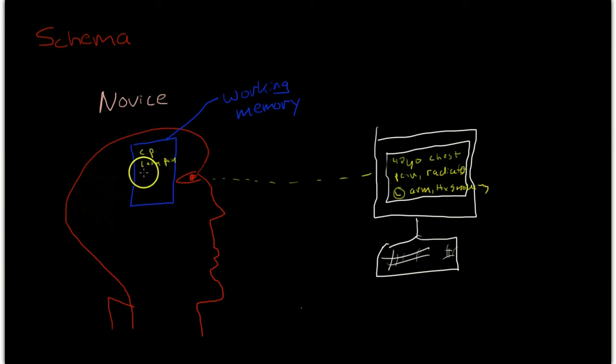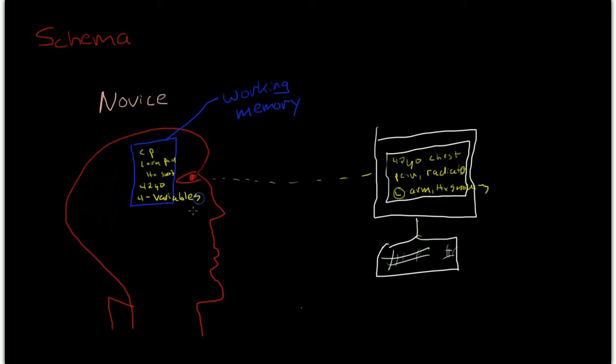It's a 42-year-old with chest pain and a history of smoking, and the pain is radiating to the left arm. So, four chunks of information, the learner will be able to hold in the working memory.